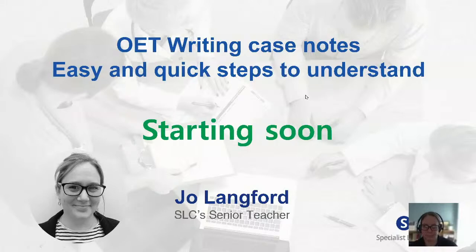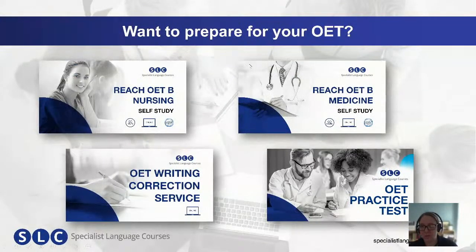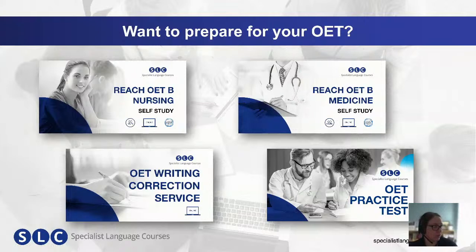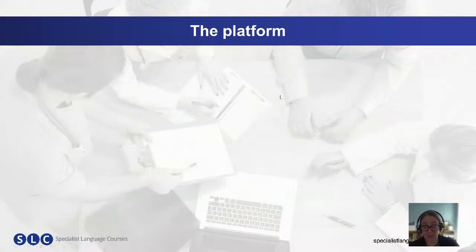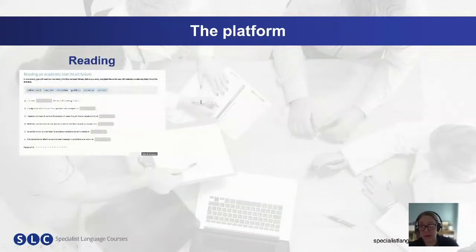Before we start, I'd just like to let you know about some of the things we've got on our website. We've got our courses — REACH OETB, Nursing and Medicine. We've also got our OET writing correction service and some OET practice tests that you can buy. The REACH OETB Nursing and Medicine courses are self-study courses, but you can also buy packages that connect you with one of our tutors. You can do self-study or with a tutor, and you can buy separate skills — just the reading, listening, speaking, or writing. Do check out our website at specialistlanguagecourses.com.